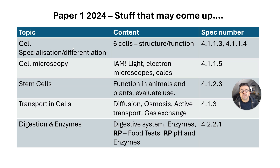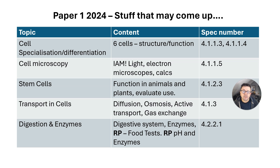Last year there was quite a bit on cells, but nothing on cell specialisation and nothing on cell microscopy. That would be a good opportunity to recap your calculations — the IAM triangle, finding image, actual size, and magnification — and knowing the differences between light and electron microscopes. A popular topic is stem cells, so look at evaluating the use of therapeutic stem cells.